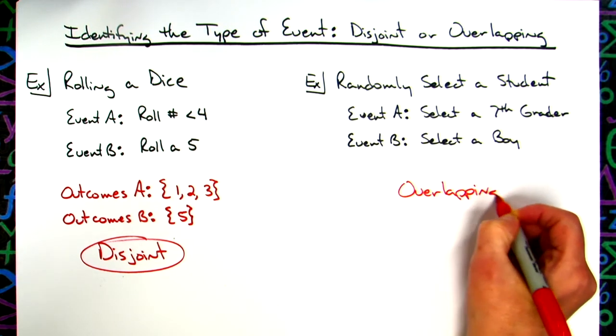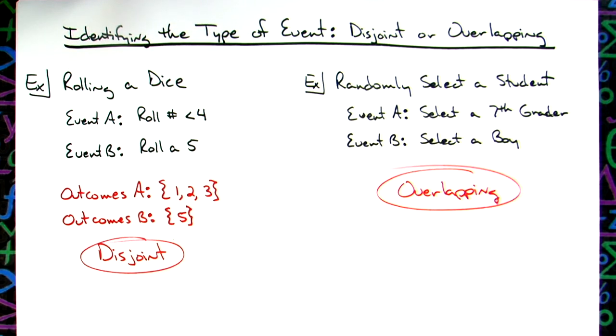So those are two quick examples for taking a look at different scenarios and events, and then determining whether they are disjoint or overlapping.